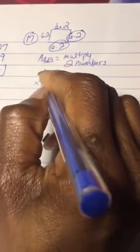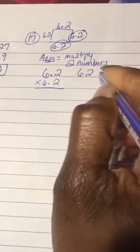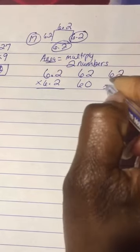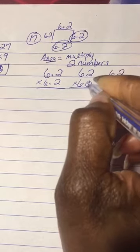So 6.2 times 6.2, and remember we're gonna do it without decimals: 62 times 62. Bring down my zero and start multiplying from the last number.